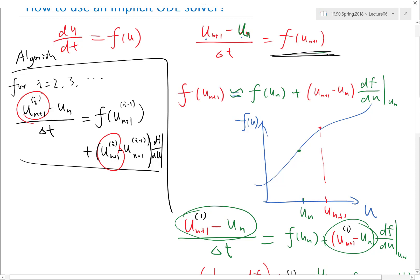So I have an initial guess, which is u_n to u_{n+1}, that should be pretty close.